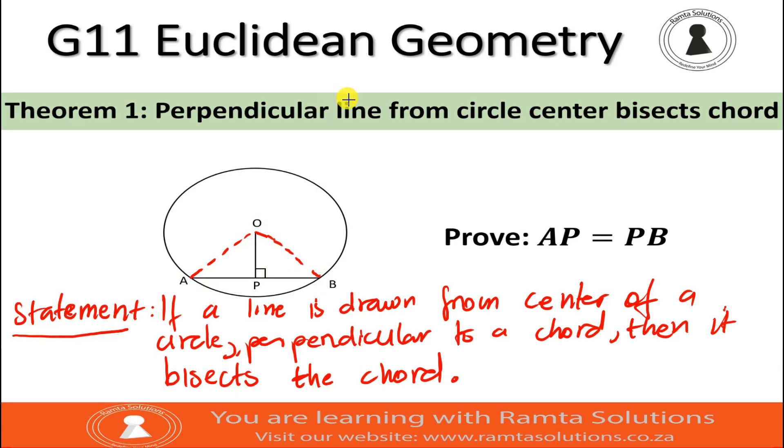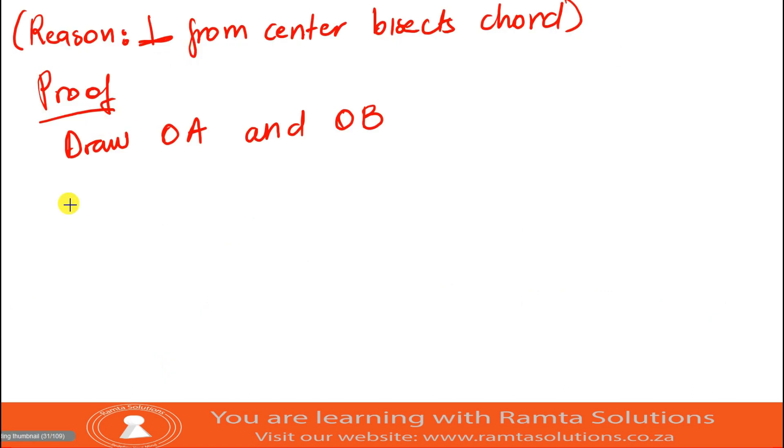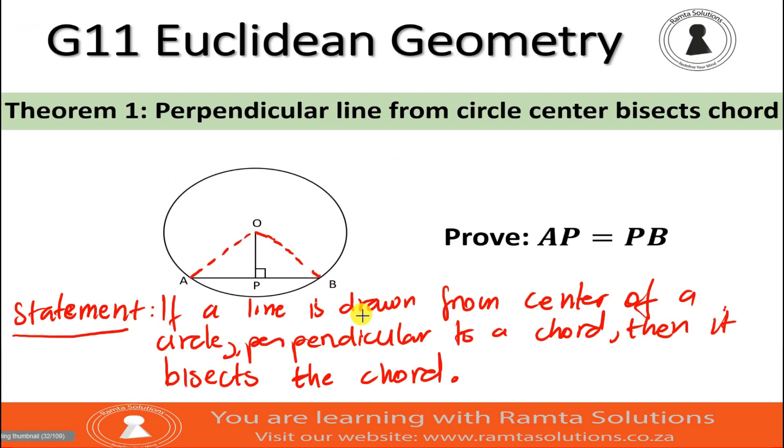Now, as we can see, we have two triangles here, which is triangle OPA and OPB. Now we will say in triangle OPA and triangle OPB. I want you now to look at this. We have angle OPA equals 90 degrees, and angle OPB is also equal to 90 degrees.